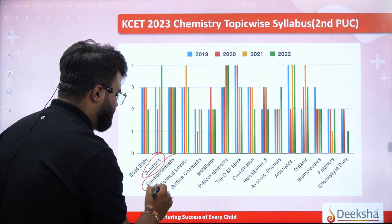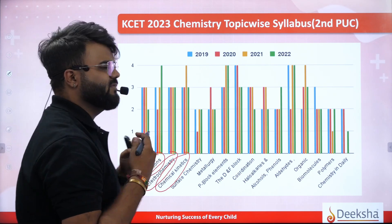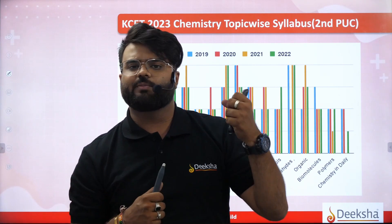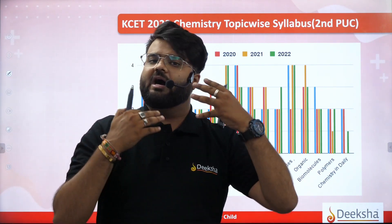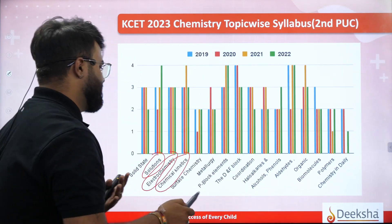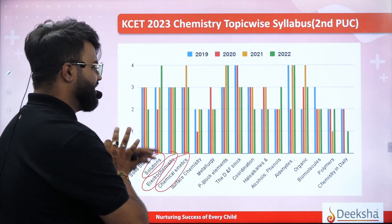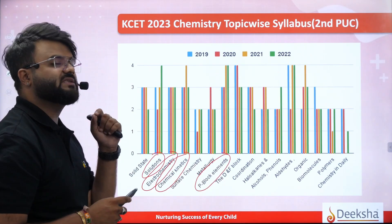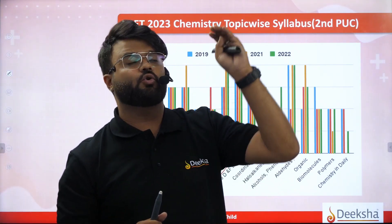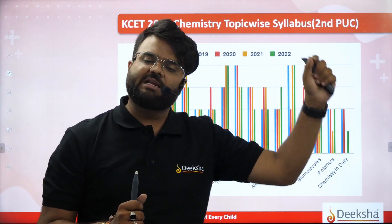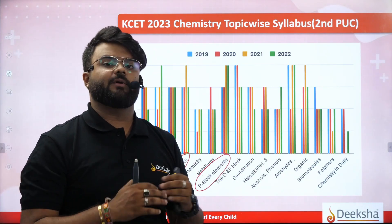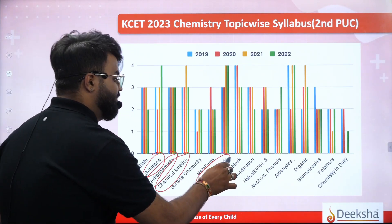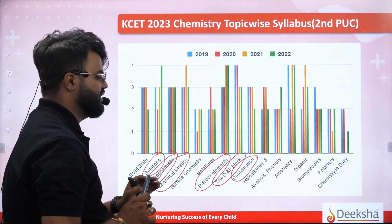The solutions chapter is very important. Coming back to electrochemistry — it is important. And chemical kinetics. From the solutions chapters: molarity, chemical kinetics, rate of reactions, first order, second order reactions, and half-life — these are the important topics. Surface chemistry is also important, but more important is the P-block element. P-block elements — second PUC — Group 15 to Group 18. D and F-block elements are very important, and coordination compounds are also important.